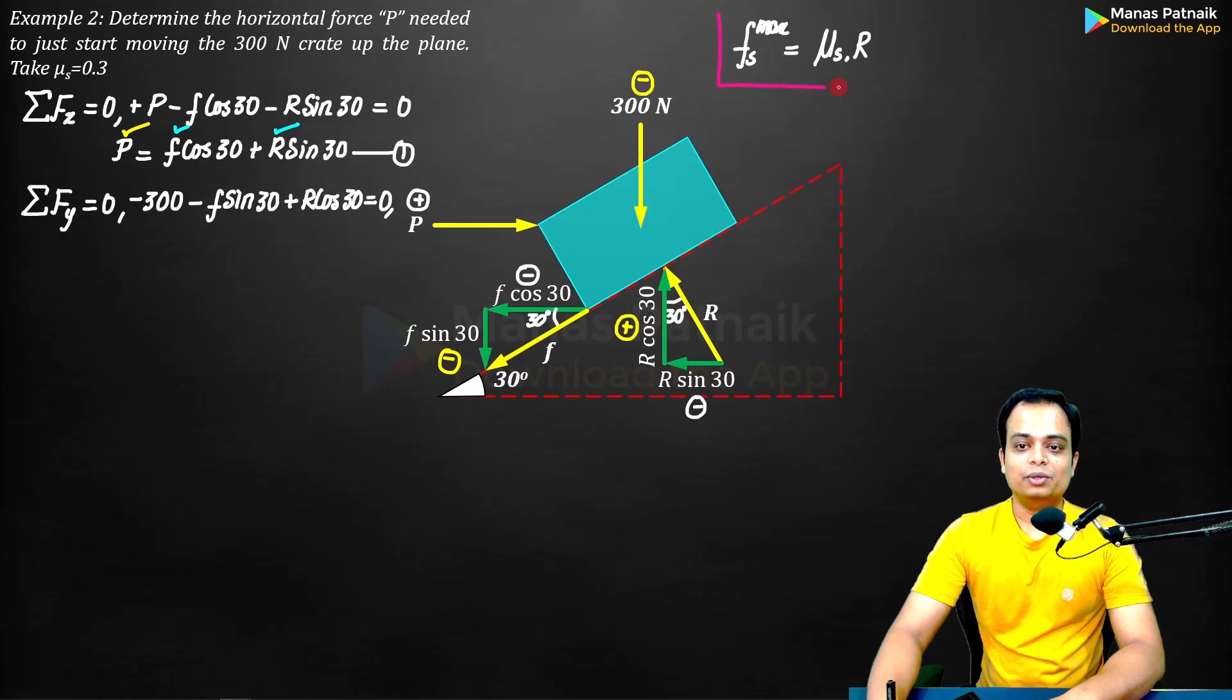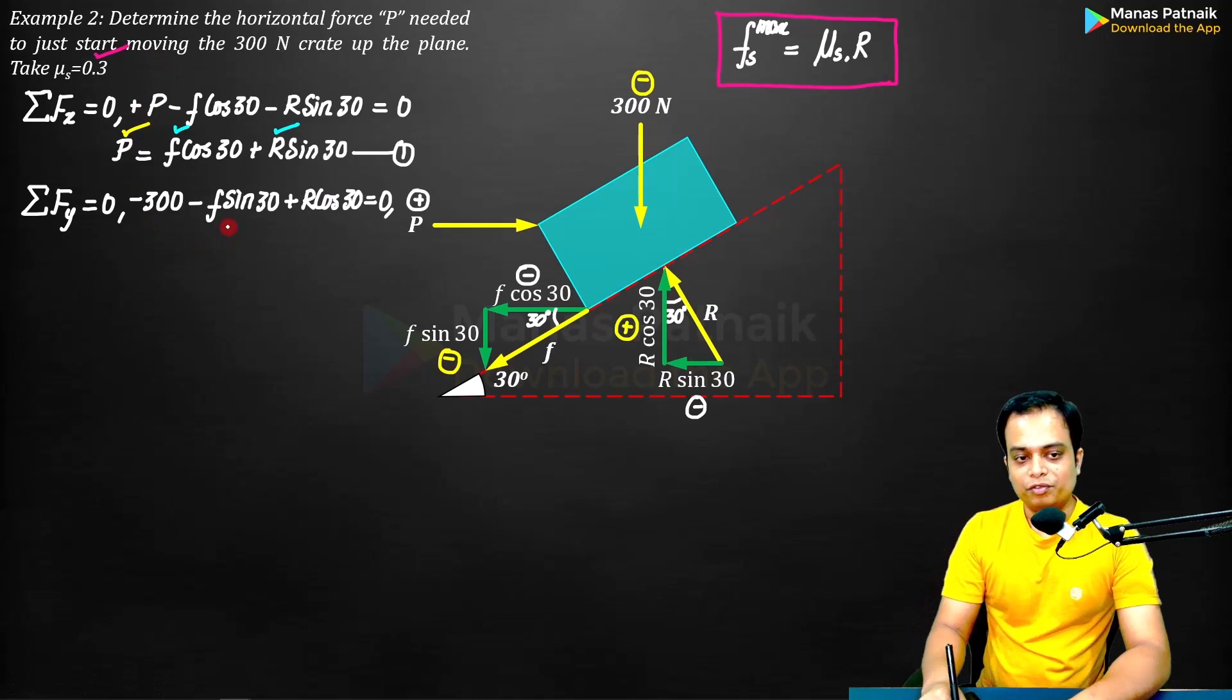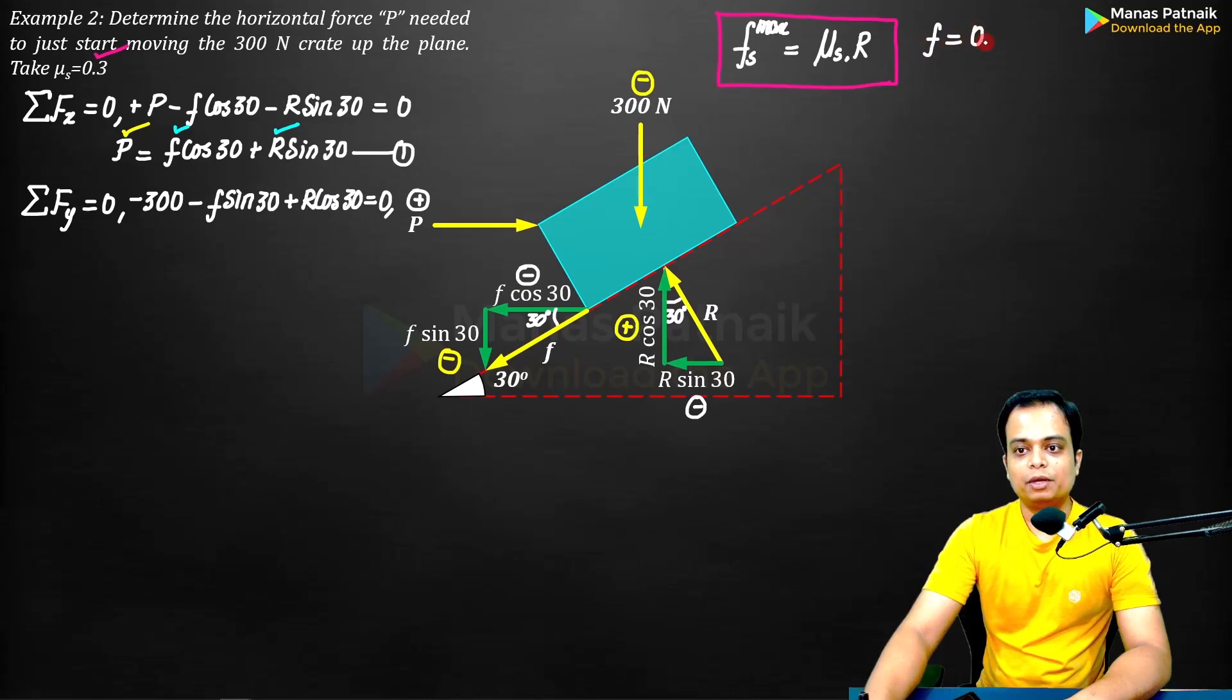Let me give you a method to do that. You know the maximum value of friction is μ_s into R. Based on this logic, μ_s has been given as 0.3. So we are going to simply put this value. F is going to be equal to 0.3R. We can do it this way.